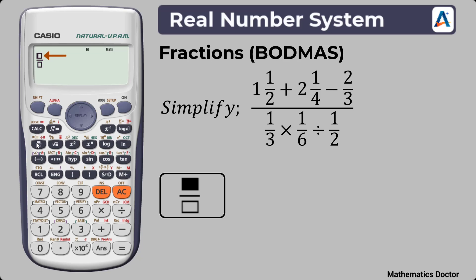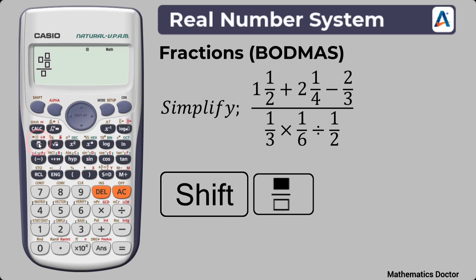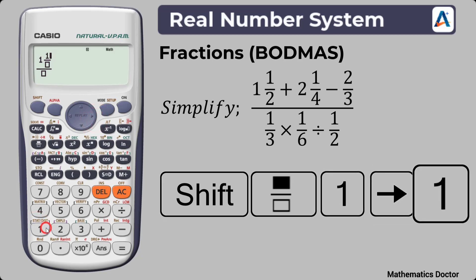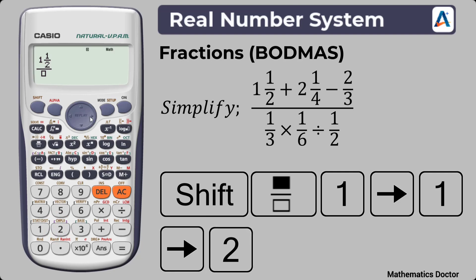Now that the indicator is blinking at the top or numerator of the fraction box, we will input the first value, which is a mixed fraction. Press Shift, then press the fraction key to get the mixed fraction input. The mixed fraction is 1 whole number. Shift the indicator right to get to the numerator box and press 1. Then shift the arrow key right to move to the denominator box and press 2, since 2 is the denominator. Press the arrow key right to take the indicator to the side of the fraction.